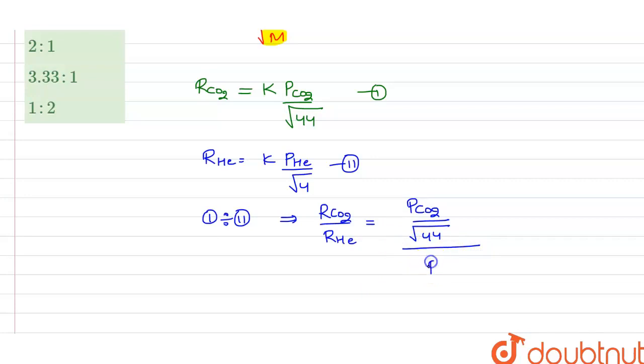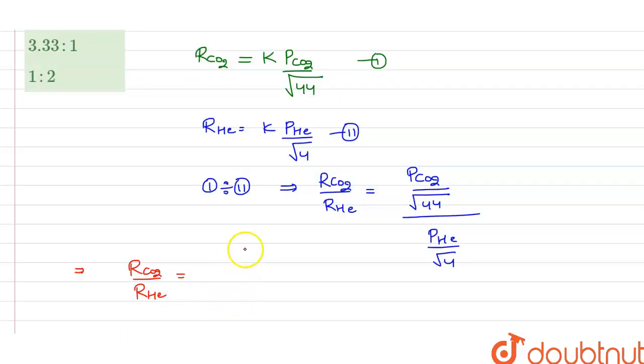In the denominator it will be pressure of helium divided by root 4. On simplifying, we get the ratio of the rate of effusion of CO2 to that of helium equal to the pressure of CO2 divided by pressure of helium, and in the root it will be 4 divided by 44.